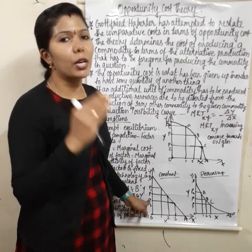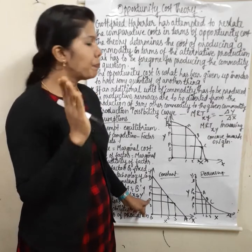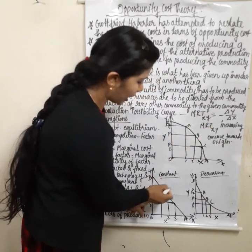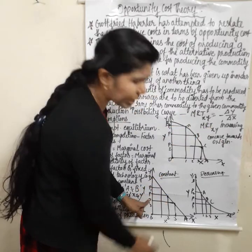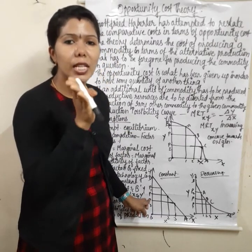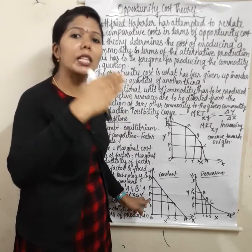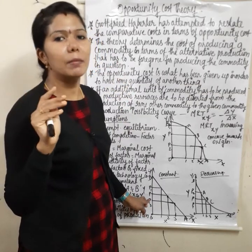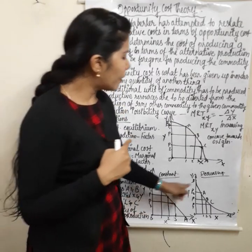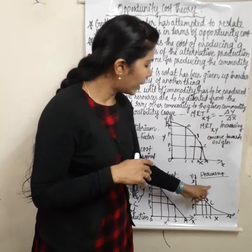The production possibility curve is downward sloping. You can mark points above and below the curve. Points above the curve are unattainable and points below are inefficient.